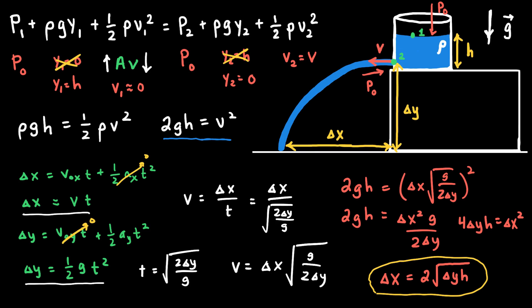Along the way we made simplifying assumptions such as v₁ ≈ 0 and ax = 0. As an example: if the hole is about 1 meter above the ground (Δy = 1 m) and the container is filled to a height of 0.2 meters above the hole (h = 0.2 m), then using Δx = 2√(Δy·h), we predict Δx ≈ 0.9 meters. This is expected to be a reasonable prediction for the range of the fluid.